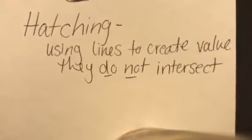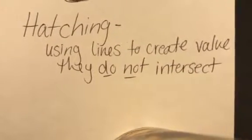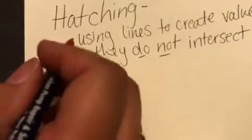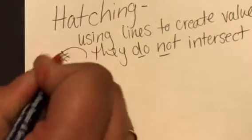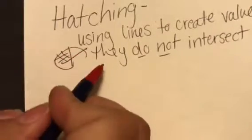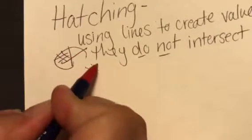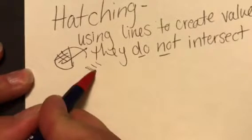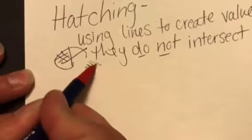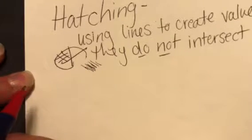Hatching. Using lines to create value, these lines should not intersect. Unlike crosshatching, where we have lines that crisscross, we're not doing that here. Here we're only going to have lines that come like this, they're never going to touch. The closer they are together, the darker our value will appear. We never want to create tees.